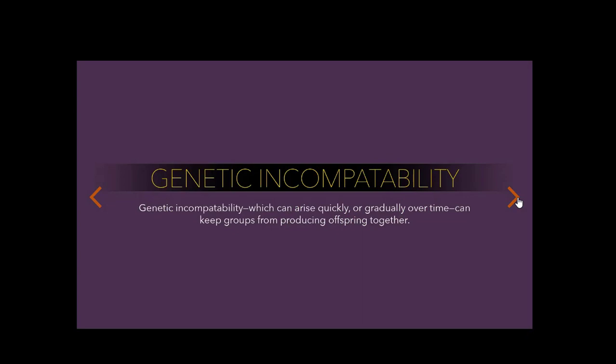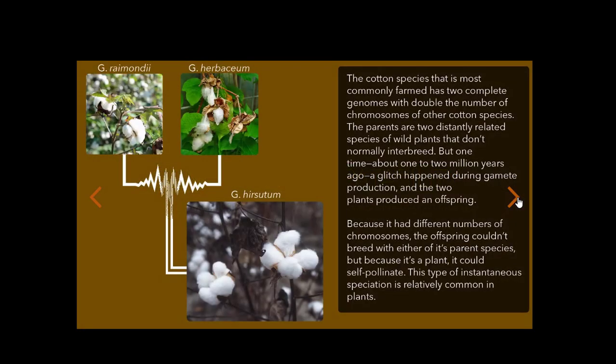Genetic incompatibility, which can arise quickly or gradually over time, can keep groups from producing offspring together. The cotton species that is most commonly farmed has two complete genomes, with double the number of chromosomes of other cotton species. The parents are two distantly related species of wild plants that don't normally interbreed. But one time, about one to two million years ago, a glitch happened during gamete production, and the two plants produced an offspring.